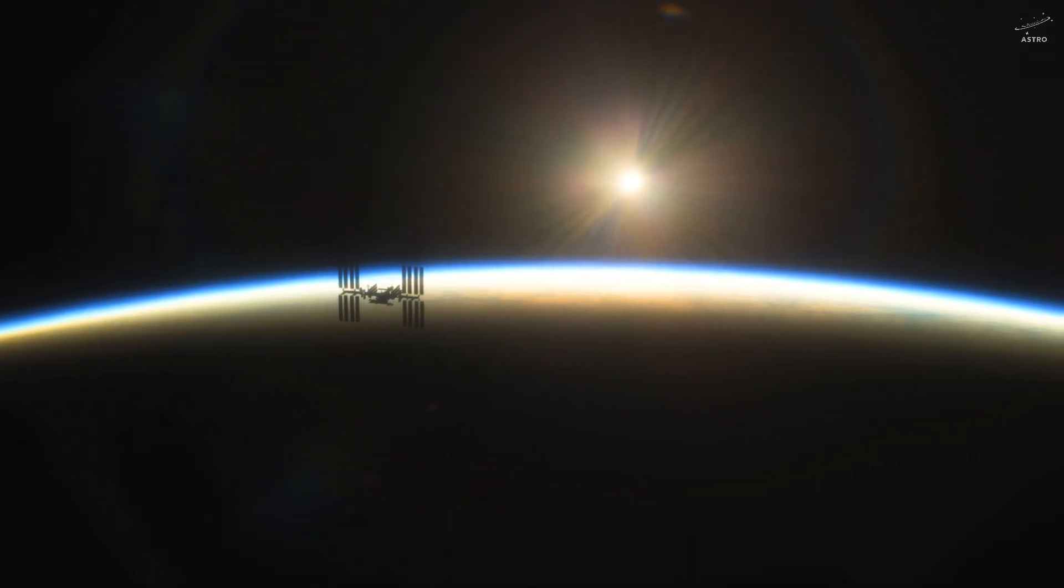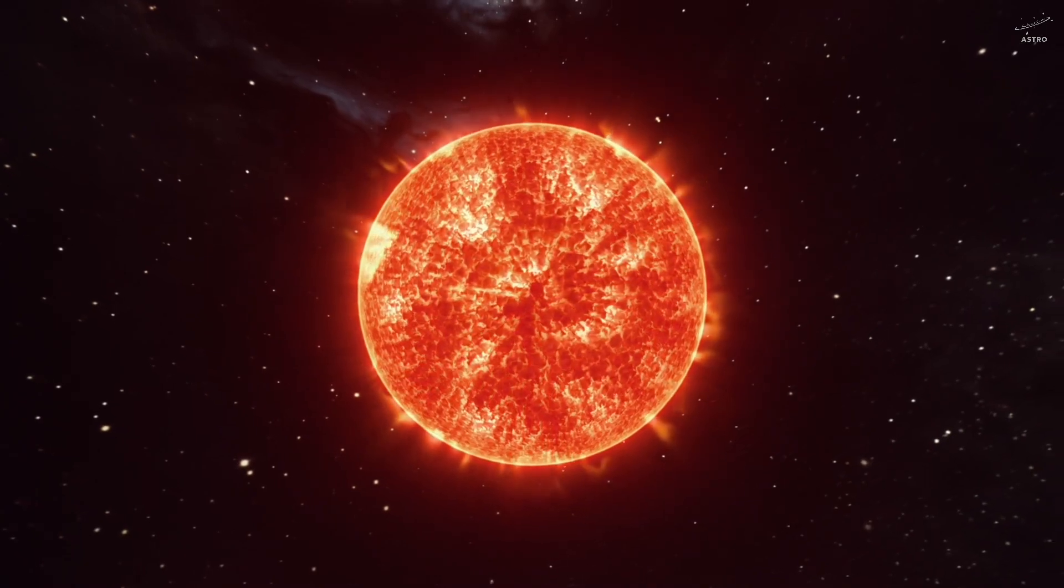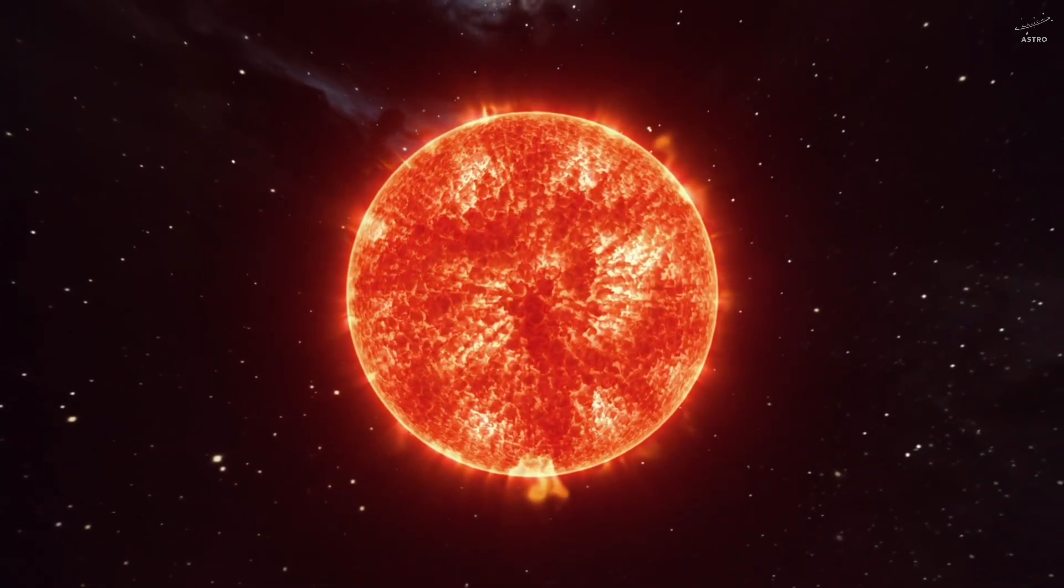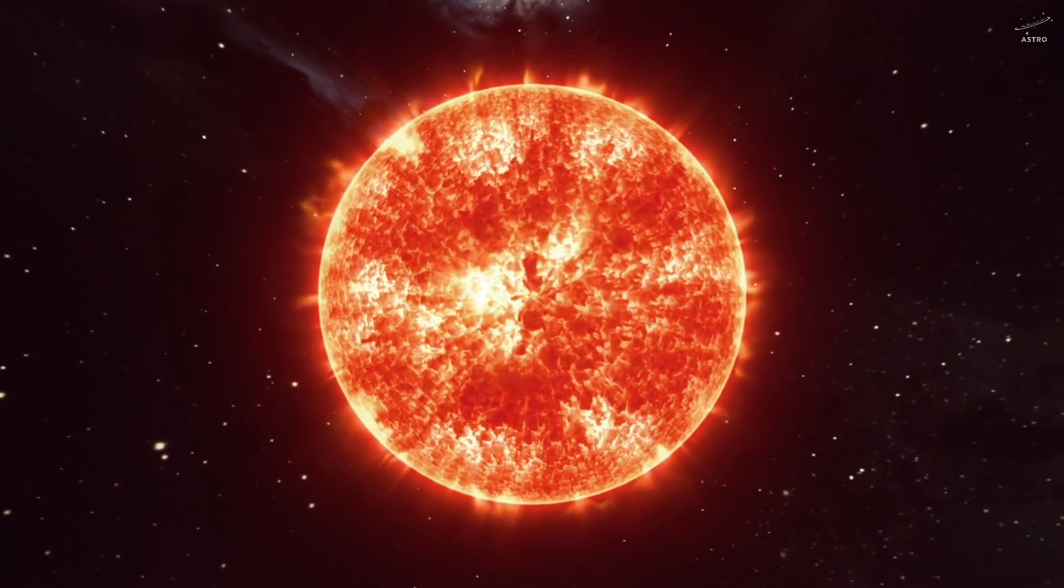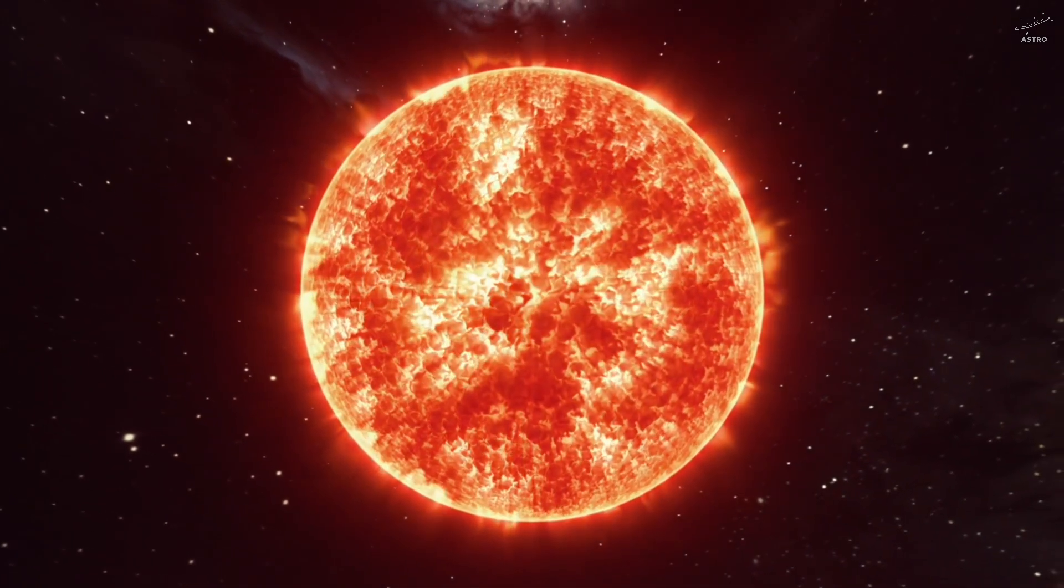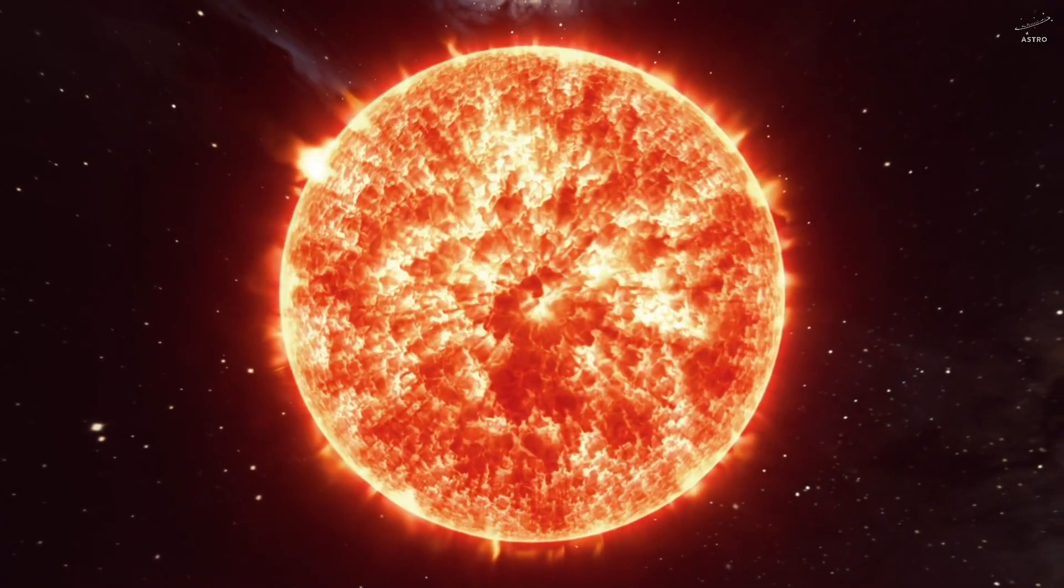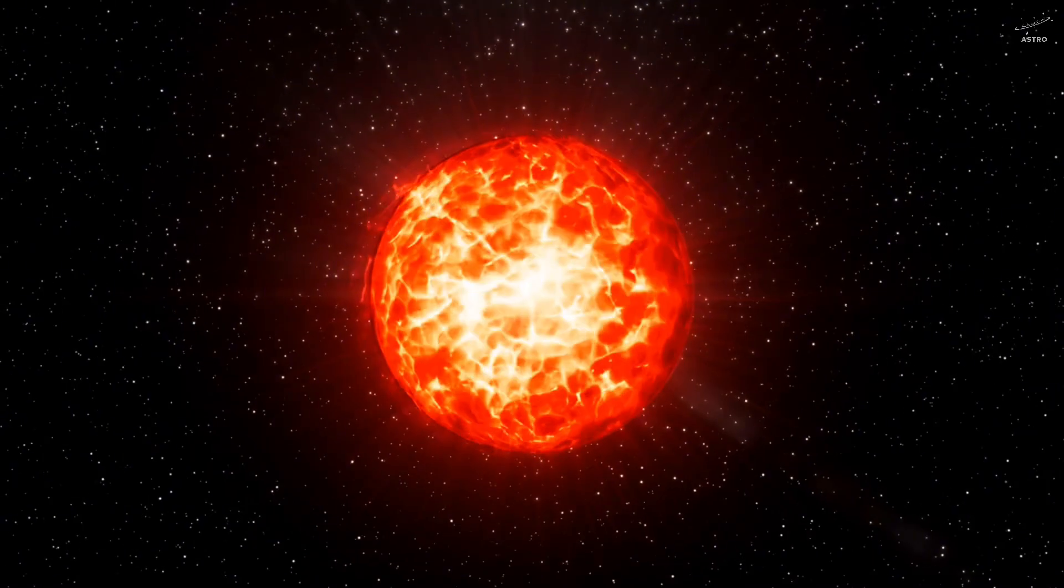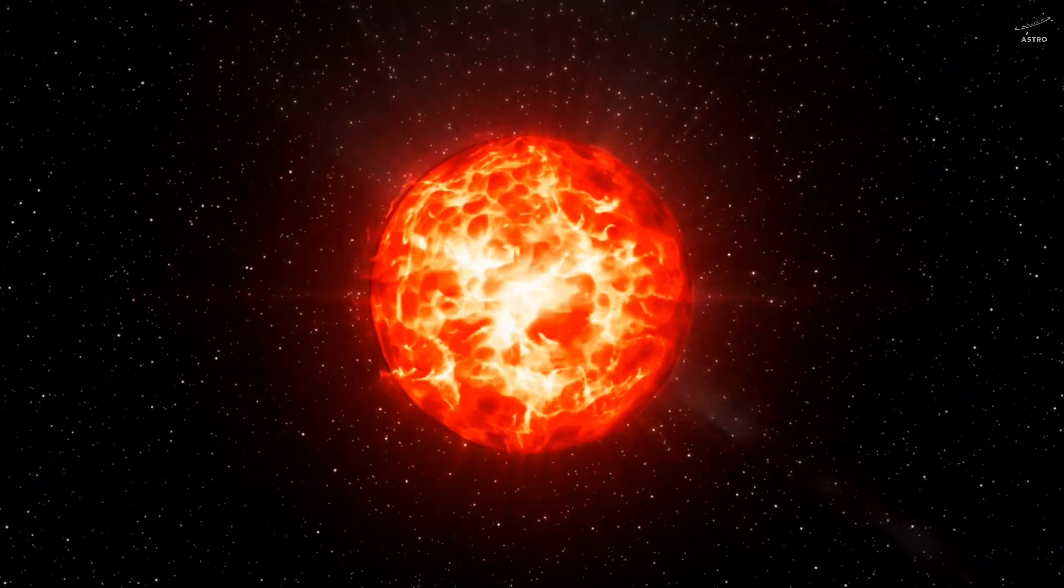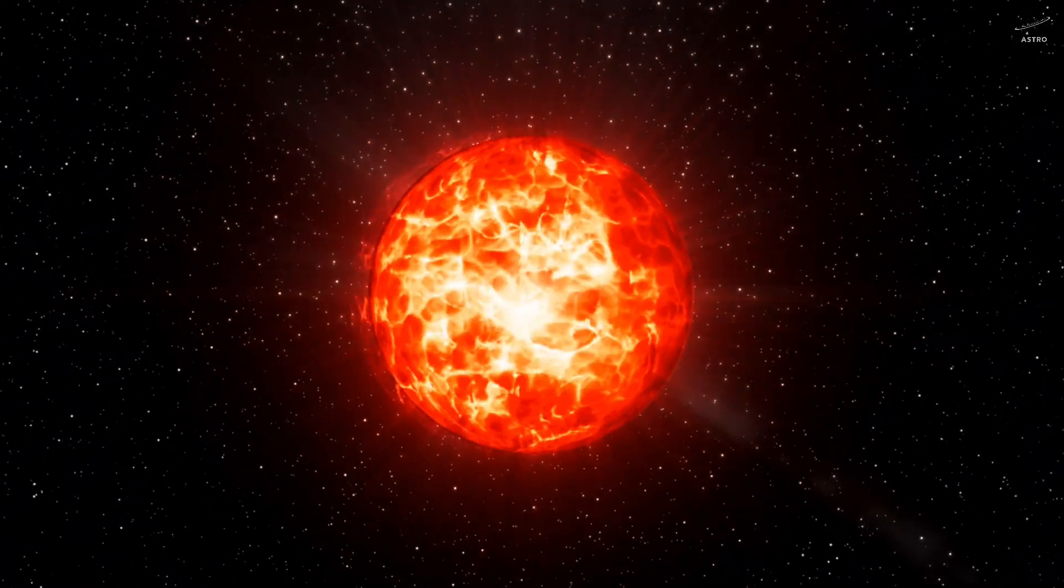But here's the paradox. Despite shedding such colossal mass, the sun isn't shrinking. In fact, it's slowly expanding. As hydrogen runs low, the core heats up. That rising pressure pushes the sun's outer layers outward. Over time, it's destined to become a giant red sphere. A red giant.